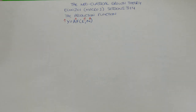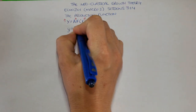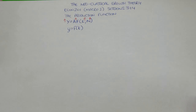Now, in neoclassical growth theory, we don't deal with an aggregate production function. We instead deal with a per capita production function, which is written slightly differently. Note the difference — it's all lowercase letters. Lowercase y refers to output per person. Little f is again the mathematical operator. And little k stands for capital per person. So this per capita production function suggests that changes in capital stock per person will change output per person.